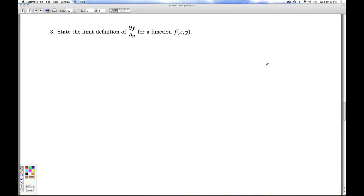Number three, we're asked to state the limit definition of the partial derivative with respect to y of a function of two variables x and y. And so that's the limit as delta y goes to zero of f of x comma y plus delta y minus f of x y over delta y provided this limit exists.